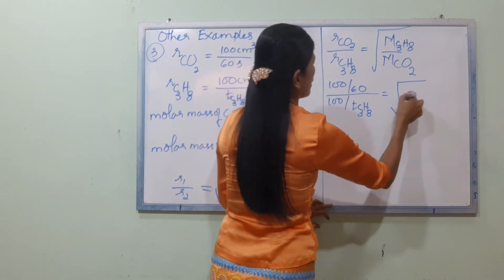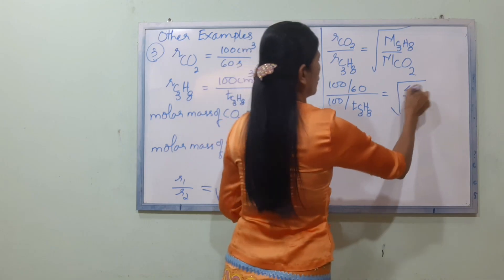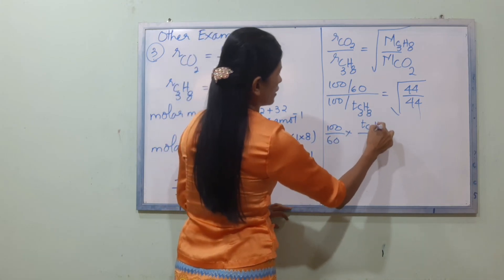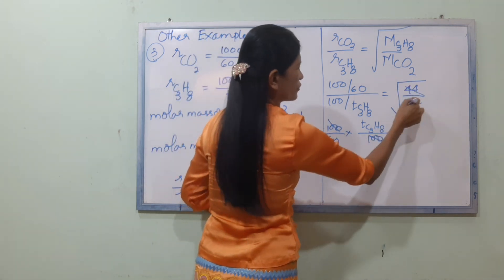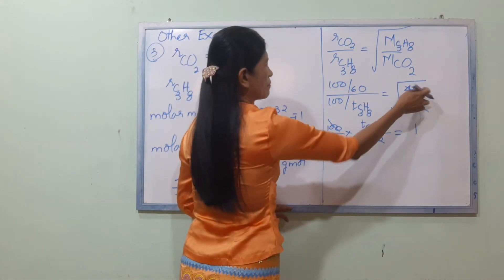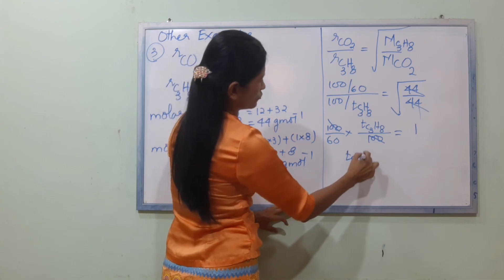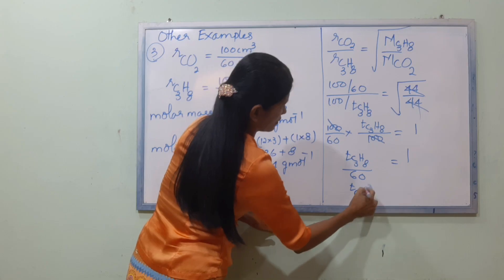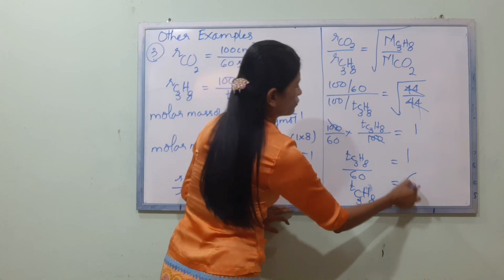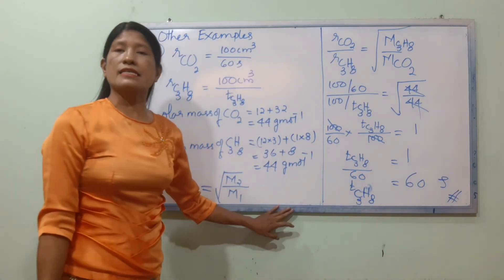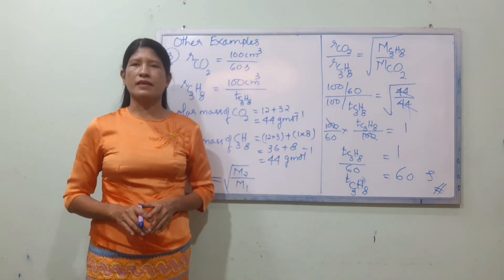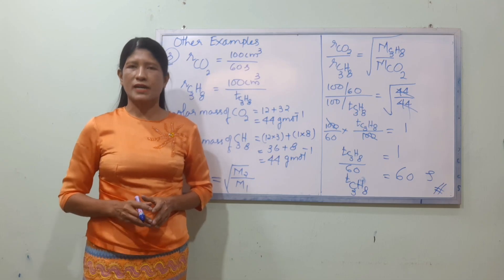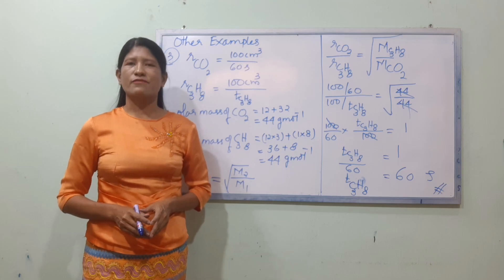M_C3H8 is 44 and M_CO2 is also 44, so the ratio equals 1. Therefore D_C3H8 equals 60 seconds — the same diffusion time as CO2. I hope you enjoyed this video and I will see you in the next video, bye bye.